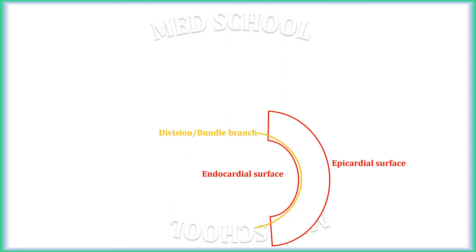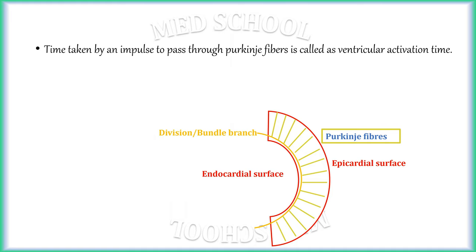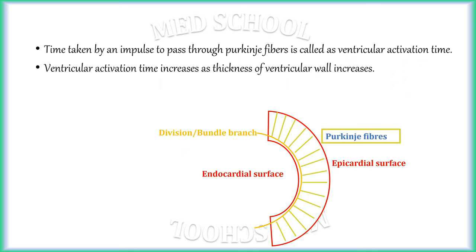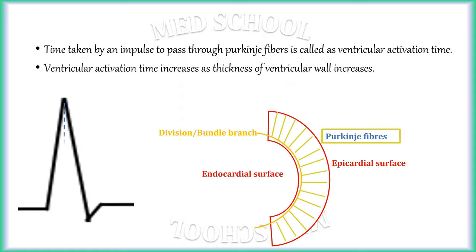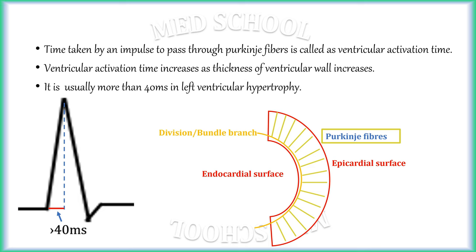As discussed in basics of ECG, Purkinje fibers travel transmurally from the endocardial to the epicardial surface. The time taken by the impulse to pass through Purkinje fibers is called ventricular activation time. Ventricular activation time increases as the thickness of the ventricular wall increases. It is denoted in ECG by the time interval between the start of the QRS complex to the tip of the R wave, and is usually more than 40 ms in left ventricular hypertrophy.